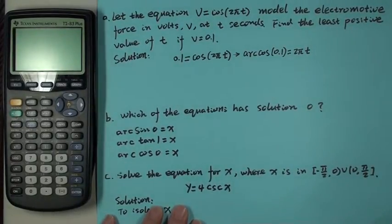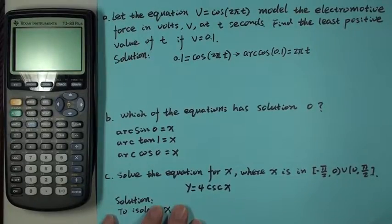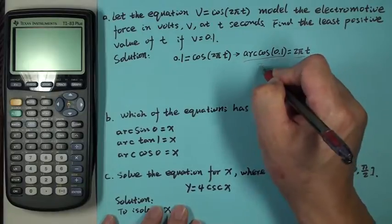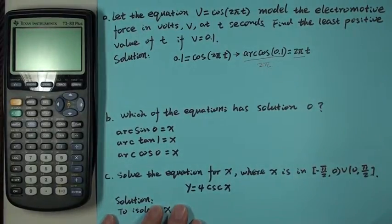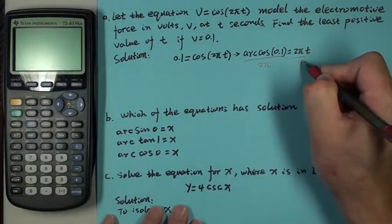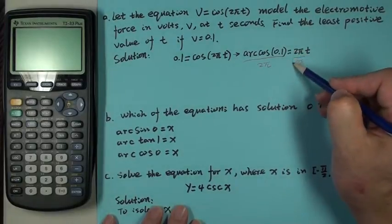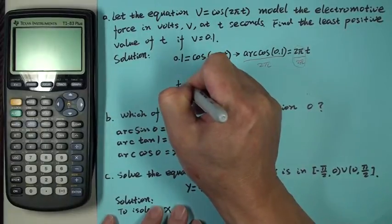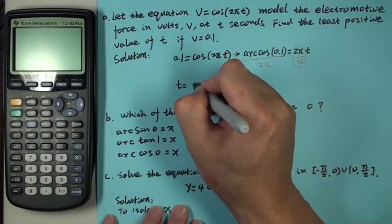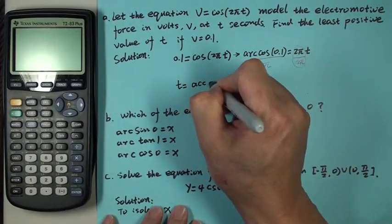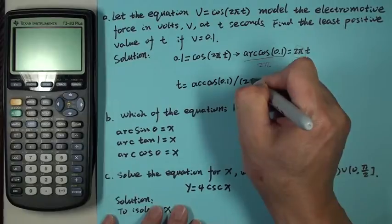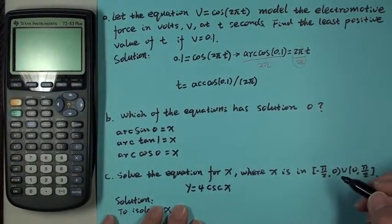Down here, we can then isolate T. If we want to isolate T, then both sides divided by 2π. This side also needs to be divided by 2π, and then we have this 2π upstairs and downstairs will be cancelled. So T then will stand alone. T is arc cosine 0.1 divided by parenthesis 2π.